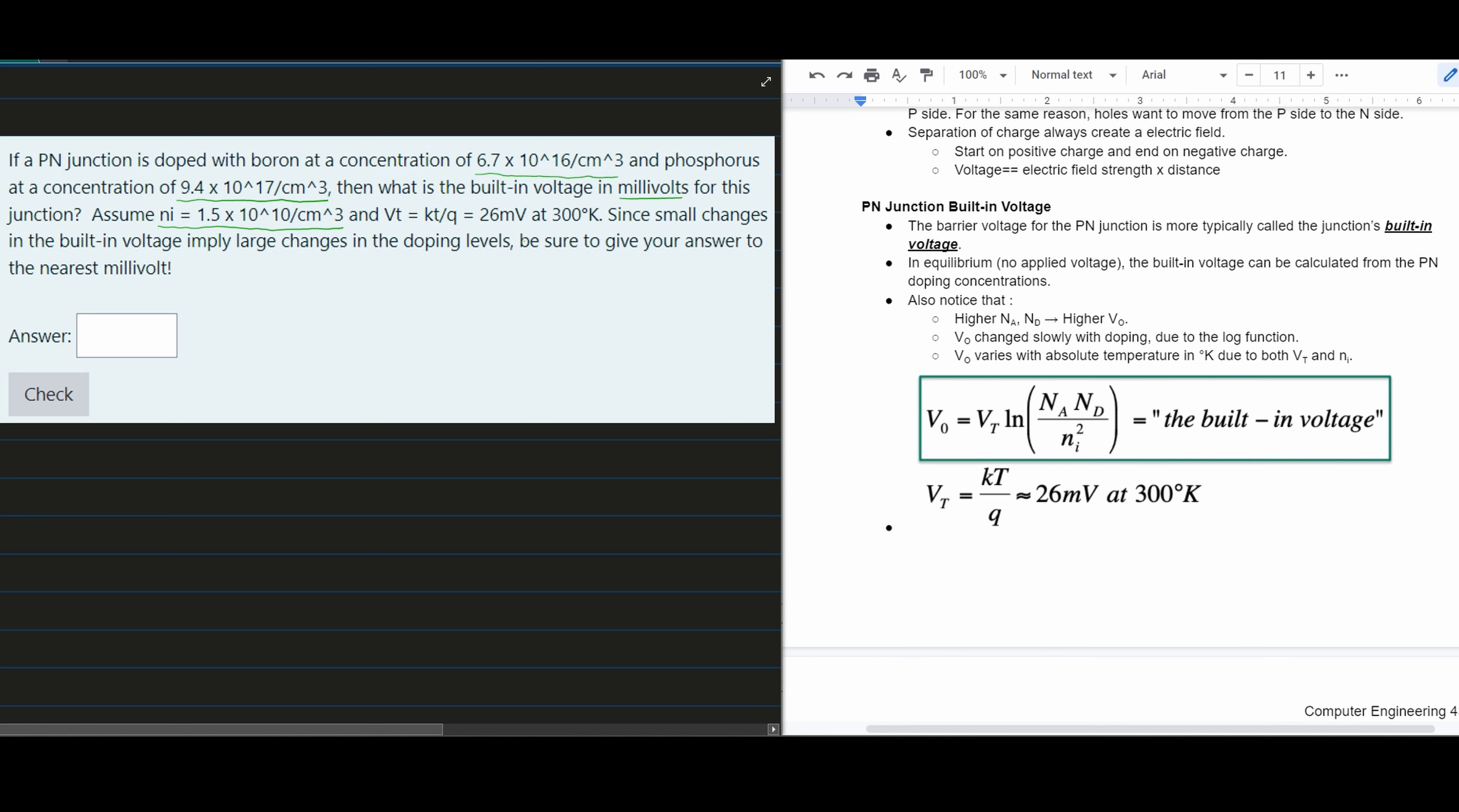Since small changes in built-in voltage imply large changes in doping levels, give the answer in millivolts. We'll use the equation shown in the notes linked below.